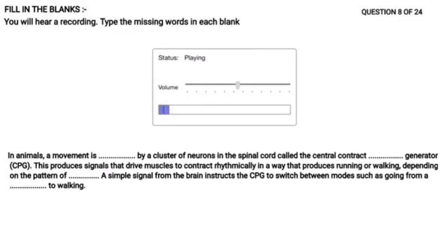In animals, movement is coordinated by a cluster of neurons in the spinal cord called the Central Pattern Generator, CPG. This process produces signals that drive muscles to contract rhythmically in ways that produce running or walking, depending on the pattern of pulses. A simple signal from the brain instructs the CPG to switch between modes, such as going from standstill to walking.